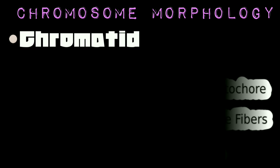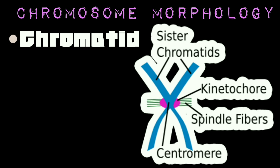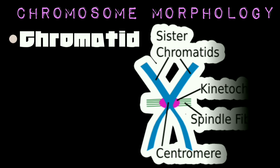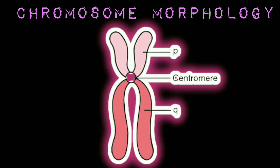Centromeres are also known as kinetochores. Each chromosome is divided into two transverse parts by its centromere; these parts are called arms. In most cases, one arm is longer than the other, termed the long arm and the short arm. The short arm is represented by the letter 'p' (from the French word 'petit' meaning small) and the long arm is denoted by 'q'. For example, the long arm of chromosome 2 can be written as 2q.